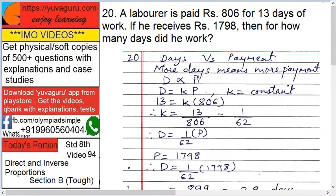Set up the equation: D equals K times P, where K is a constant. So 13 equals K times 806, which gives K equals 13 upon 806. Simplifying, 13 and 806 share a factor of 13, so K equals 1 by 62. Therefore the equation becomes D equals P upon 62.